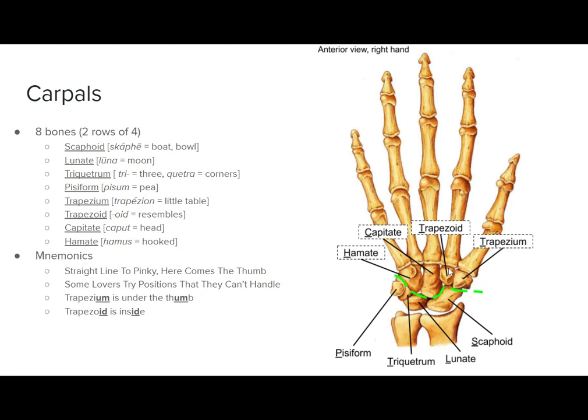Well, trapezoid, trape, trapezeon means little table. And then oid means like to resemble. So this one, I guess the idea is this one looks like a little table and this one merely resembles one. Honestly, it's really annoying that they named these so similarly, but it is what it is.